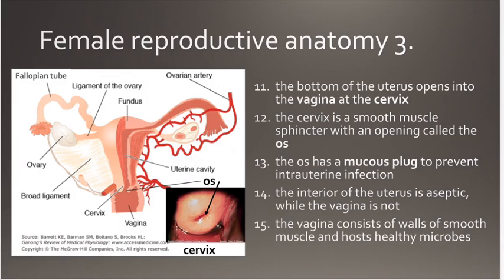At the bottom of the uterus, we have the cervix. The cervix is smooth muscle and is going to close off the area between the uterine cavity and the vagina. However, you do have to have an opening for sperm to enter and for childbirth for the infant to come out of the uterus, so there is an opening called the OS.